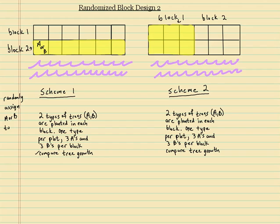So A or B — same thing here. A block could end up A, A, A, B, B, B, or A, B, A, B, A, B. You're going to randomly assign three A's and three B's into each block.